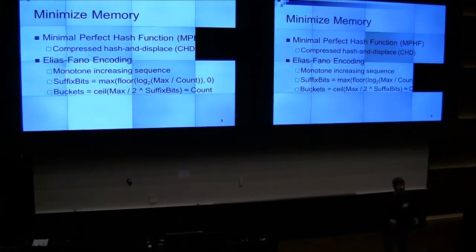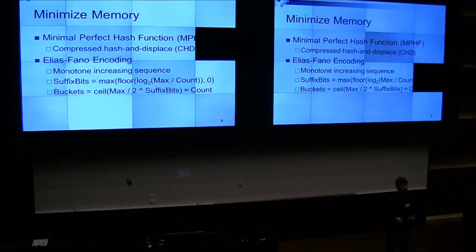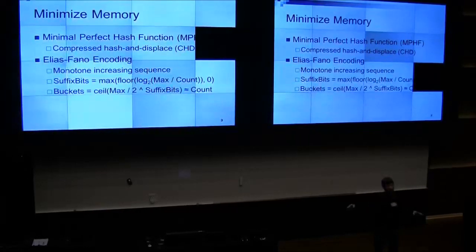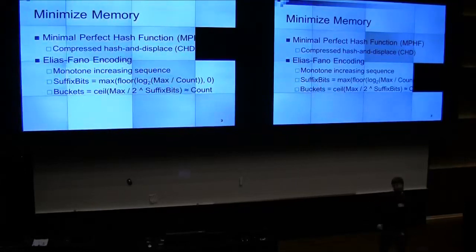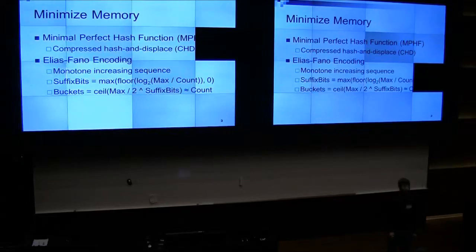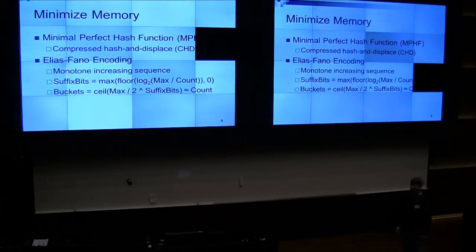A minimal perfect hash function is a hash table data structure where 'perfect' means there are no collisions. You're given all the data up front, then you generate a hash function such that it maps into the hash table without any collisions. 'Minimal' means there are no empty slots. The current best algorithm is Compressed Hash and Displace, invented in 2009.